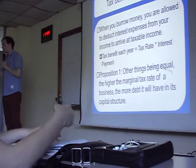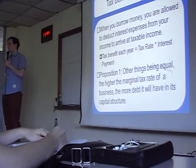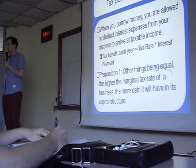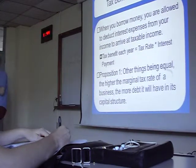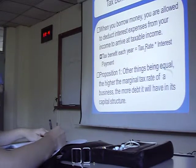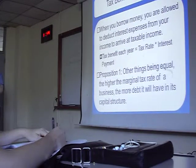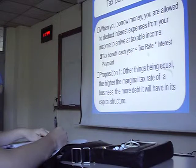The first proposition here is if everything else is equal, if a company has a higher tax rate, it's going to have more debt. So if we have to pay a lot of tax, are we going to prefer debt or equity? Debt. We get more benefit. Our benefit is tax rate multiplied by interest payment. So if we increase this number, we can get a higher tax benefit each year.